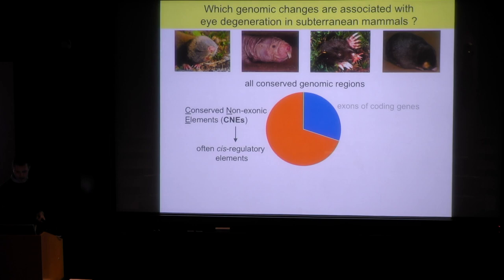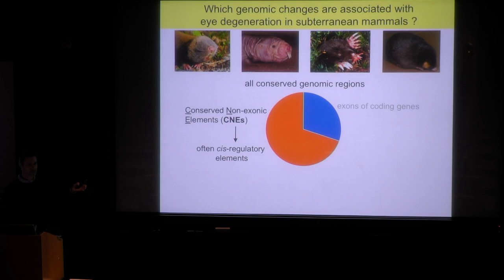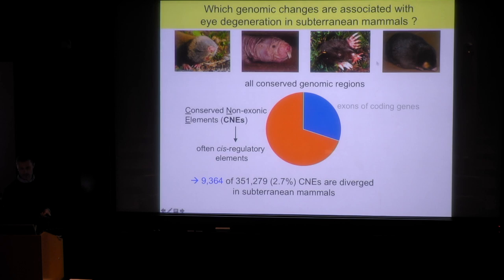The other class of conserved genomic regions are conserved non-exonic elements, which I abbreviate as CNEs. These CNEs often overlap cis-regulatory elements that control the expression patterns of genes. Out of a large set of 350,000 CNEs, we found significant sequence divergence in these subterranean mammals in about 9,300 of them. The question then is what is special about these diverged CNEs.